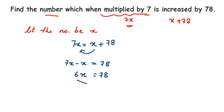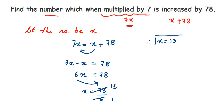Now we transpose 6 to the other side. Since 6 is in multiplication, transposing puts it in division: 78 divided by 6 equals 13. So x equals 13. Since we assumed x is the number, the required number is 13. I hope this question is clear — if you have any doubts, drop a comment. Thank you so much for watching.